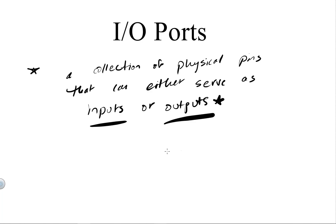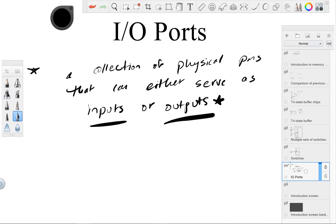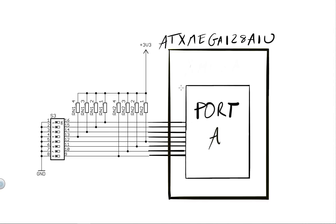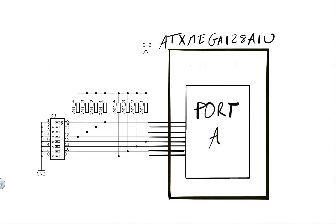With that understanding, let's get into the first example. Previously in this course we've utilized the out-of-the-box switch and LED backpack, which has DIP switches, tactile switches, and LEDs. For this first example let's remain in the context of the DIP switches. In this diagram I've copied the relevant DIP switch circuit from the backpack schematic, and I denote that the DIP switch package is hardwired to Port A within our microcontroller.